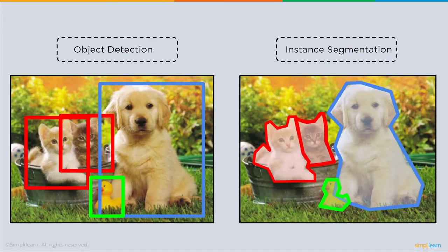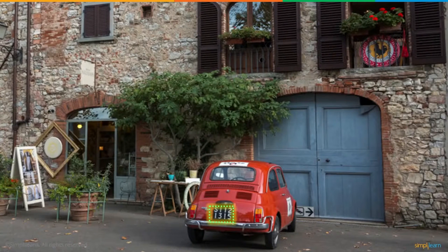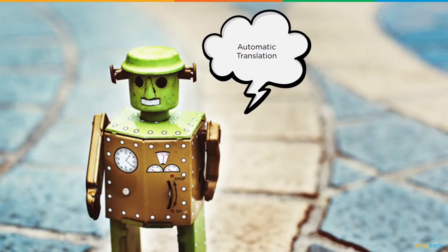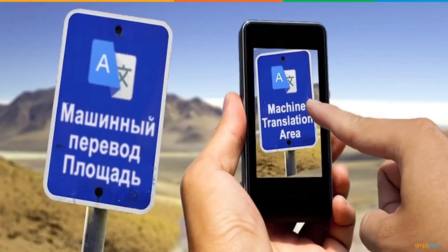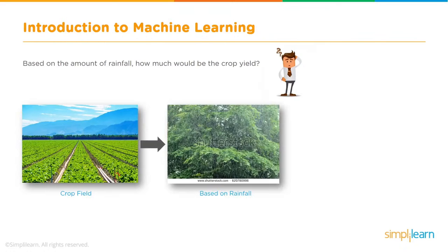Applications of machine learning include instance segmentation and object detection — finding where different objects are in a picture and cutting them out. Number plate detection identifies a car's plate and can then perform automatic translation of symbols from another language. Machine learning can also predict crop yield based on the amount of rainfall received.